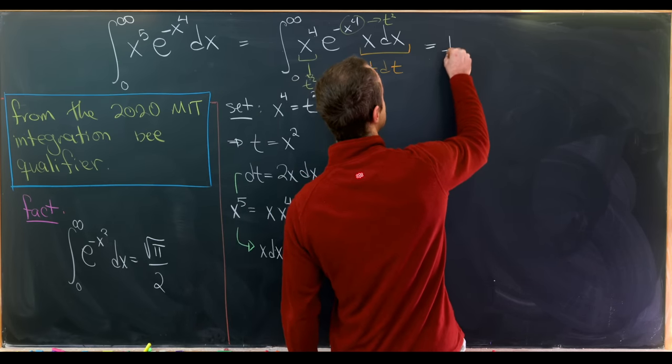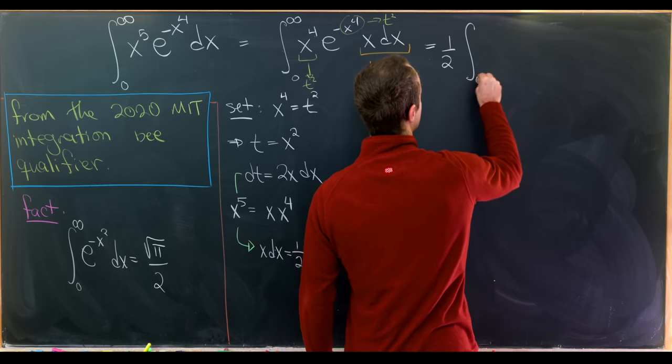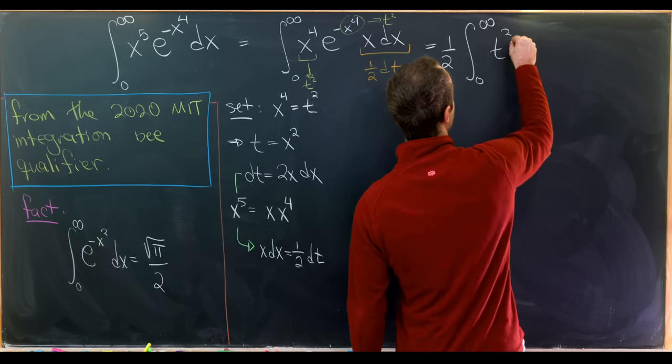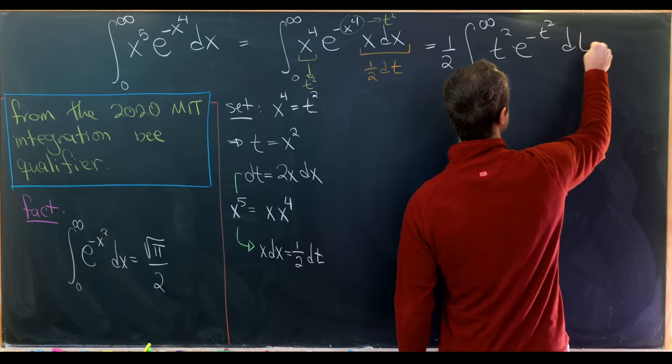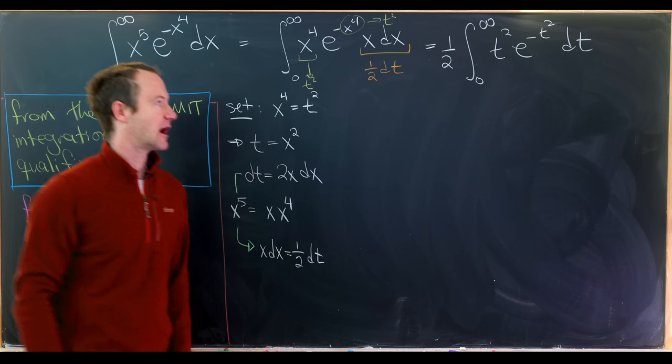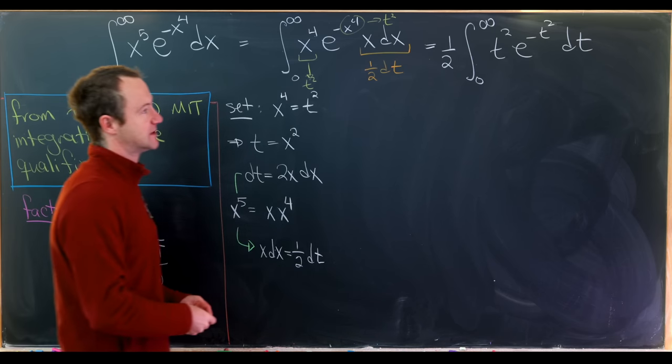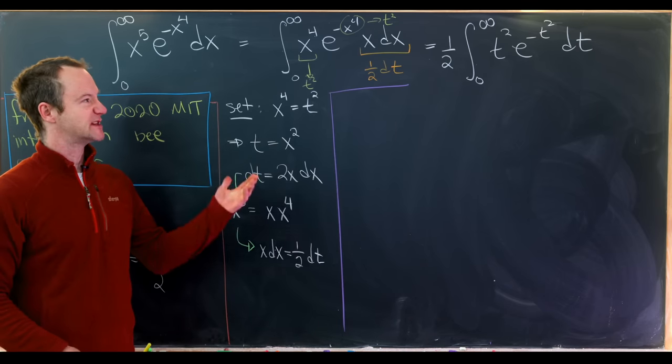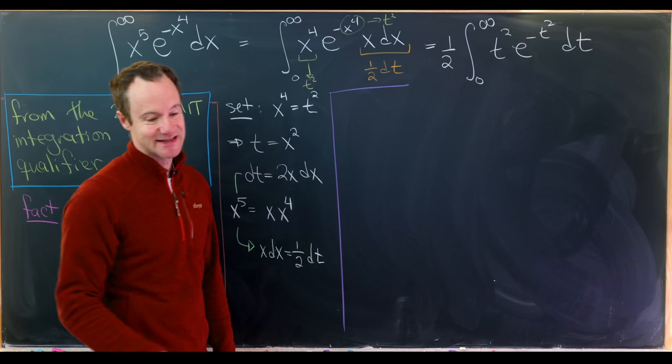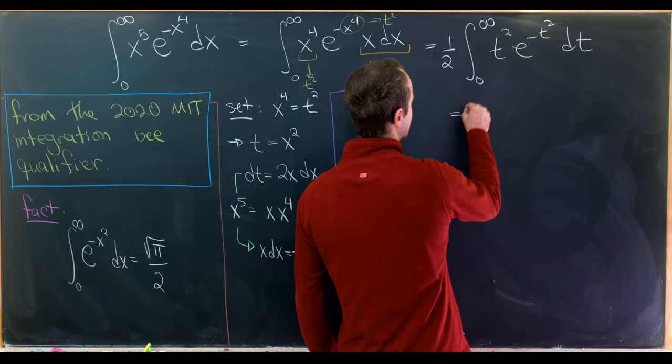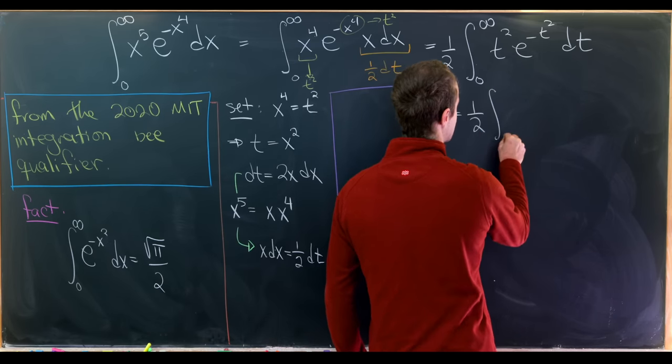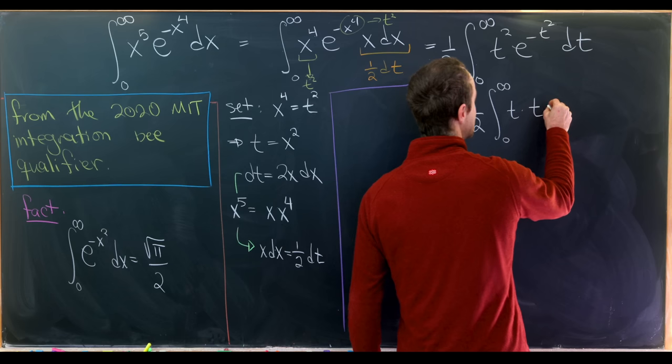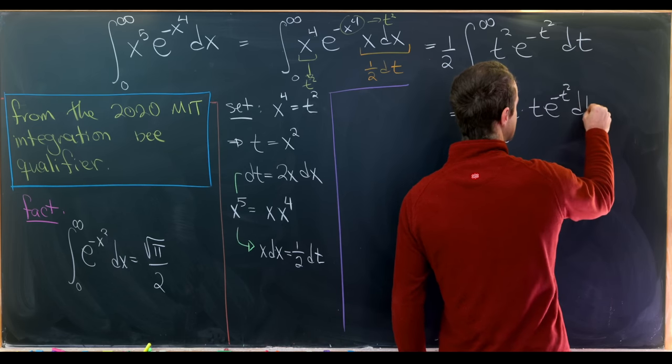That'll allow us to rewrite this as one half. And then we'll have the integral from zero up to infinity of t squared times e to the minus t squared dt. Now we have to figure out how to evaluate that left over bit. But we can do that with integration by parts. So let's split that t squared into t times t. So we can write this as one half. And then we'll have the integral from zero up to infinity of t times t e to the minus t squared dt.